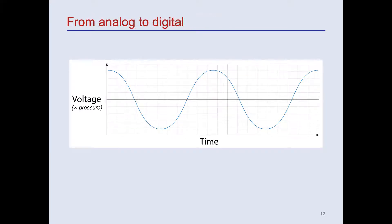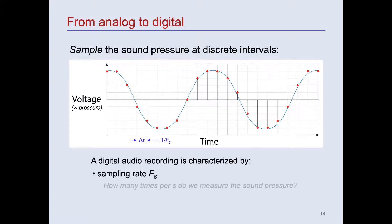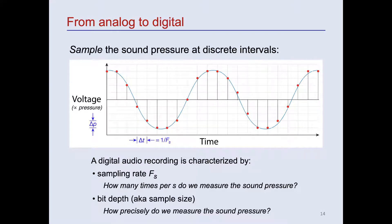To create a digital representation of the time-varying sound pressure, we measure or sample the voltage waveform at discrete intervals, typically tens of thousands of times or more per second. A digital audio recording is thus characterized by its sampling rate, or how many times per second the voltage waveform is measured. The interval between successive samples, here called delta T, is simply the inverse of the sampling rate. And a digital audio recording is also characterized by another parameter called its bit depth, or sample size, which determines how precisely the voltage or pressure is measured in each sample. The precision of those measurements is here called delta P. We'll have more to say about bit depth shortly.